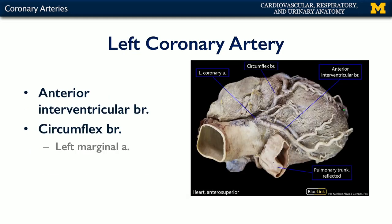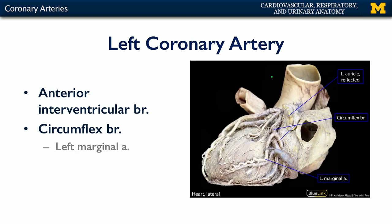Here's a superior view of a cadaveric heart showing the origin of the LCA and the anterior interventricular branch heading down and supplying the myocardium — sometimes called the left anterior descending artery or LAD by clinicians. The other branch of the LCA is the circumflex branch, giving rise to the left marginal artery, which then continues on to the posterior aspect of the heart. A lateral view shows the circumflex branch coming down and the left marginal artery of the heart.